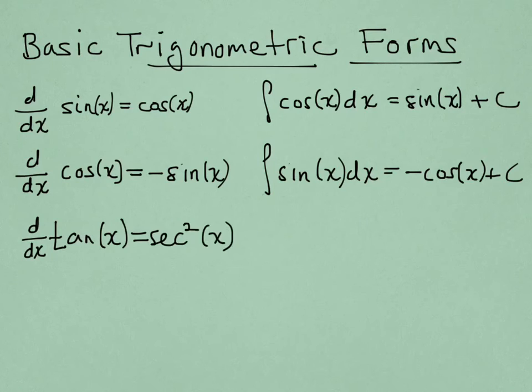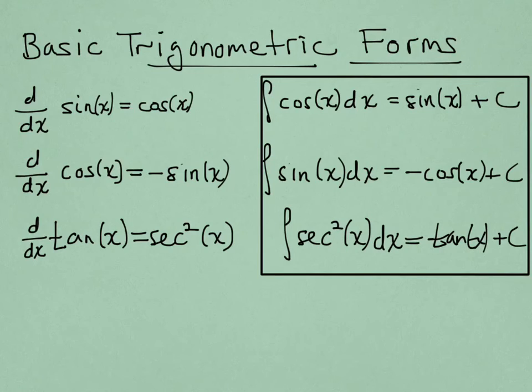Another one, if you differentiate tangent, you get secant squared of x. That means if I integrate secant squared, you get tangent of x. There are three other ones of course that come from the other three trig derivatives, but we'll just concentrate on these right now. So for example, if I want to integrate the sine of x over 2, here's how I think about it.